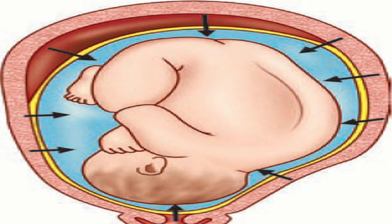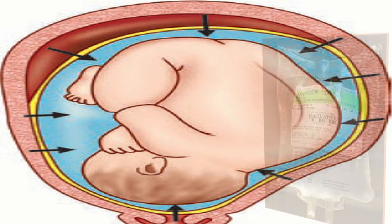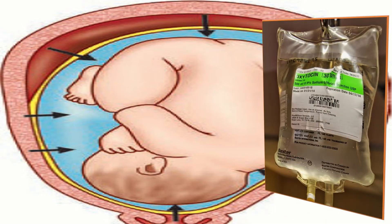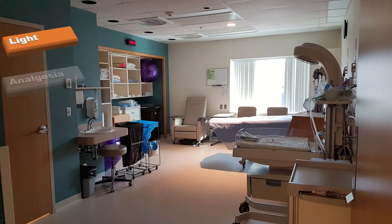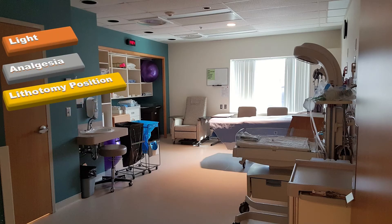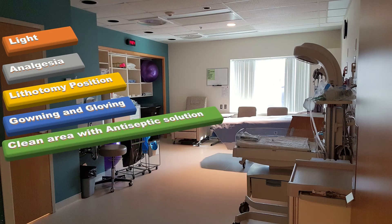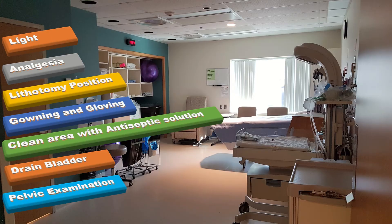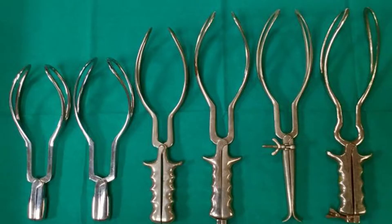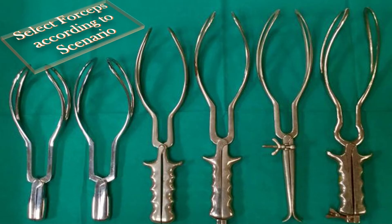I will ensure there are adequate uterine contractions and if required, start oxytocin infusion. In the presence of adequate light and analgesia, I will place the patient in the lithotomy position. After gowning and gloving, I will clean the vulva with aseptic solution, drain the bladder, and perform appropriate pelvic examination to assess the position of the presenting part.